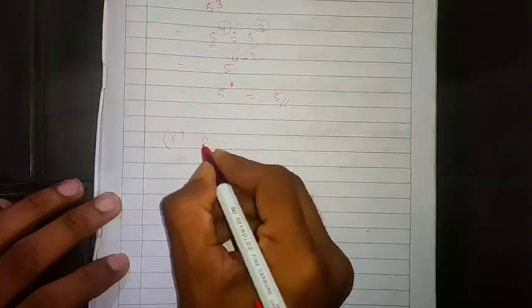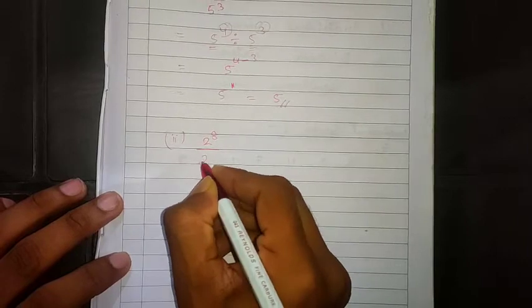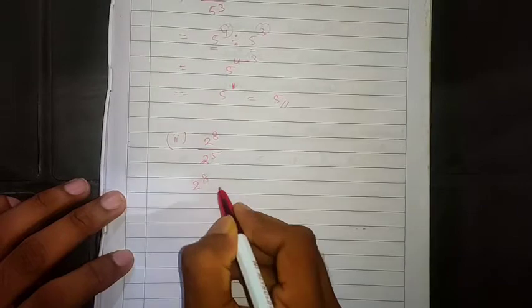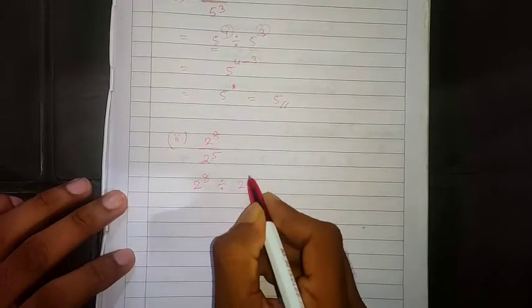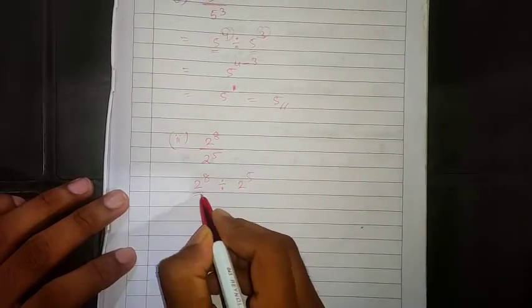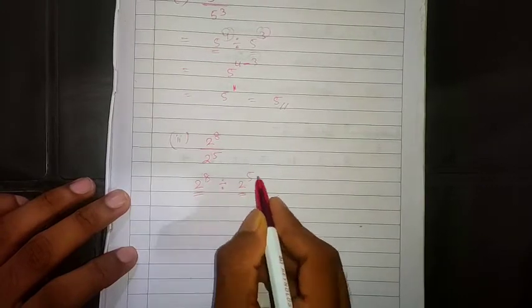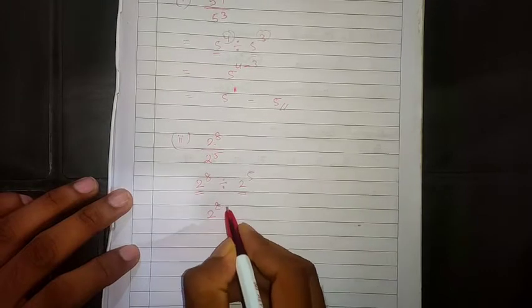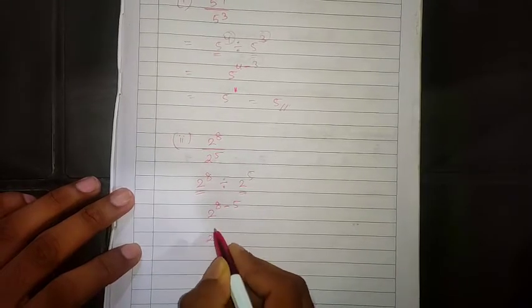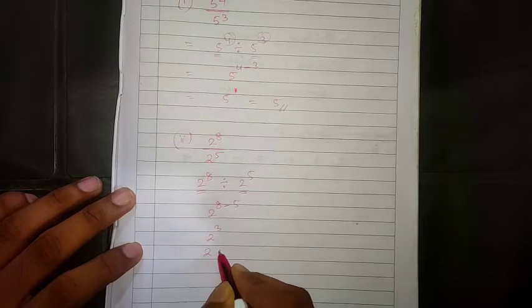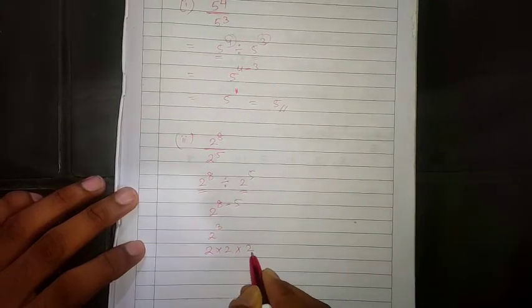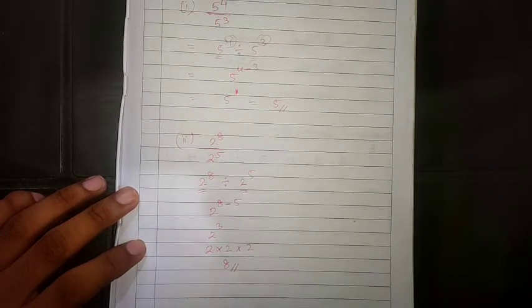Now number 2: 2 raised to 8 divided by 2 raised to 5. When bases are same and they are divided, their power is subtracted. So the base is 2 and 8 minus 5, the answer will be 2 raised to 3. That is 2 times 2 times 2, which is 8.